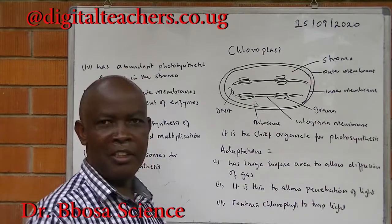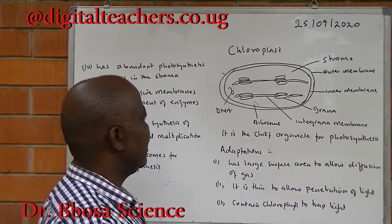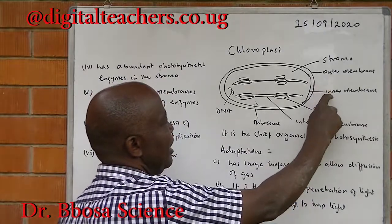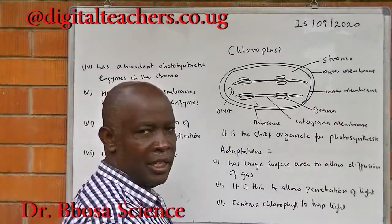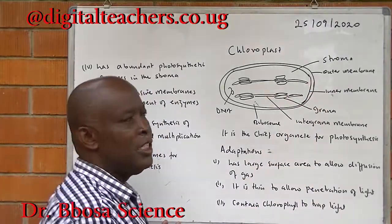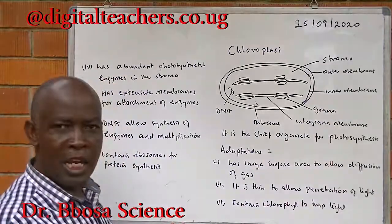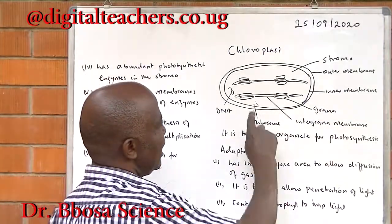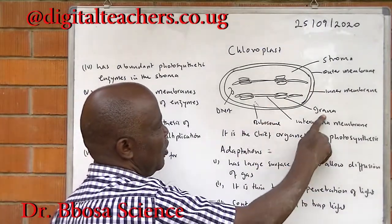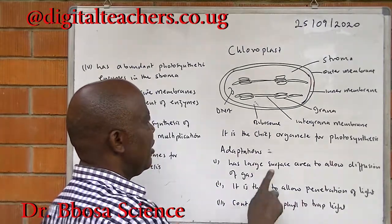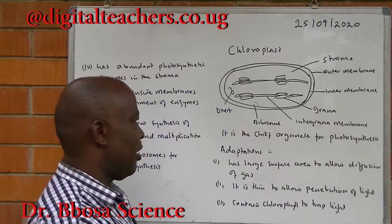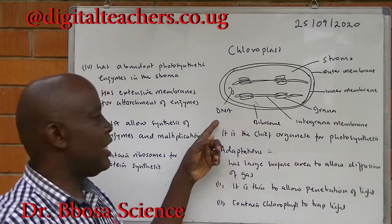This is the chloroplast — the major organelle for photosynthesis. It is bound by a double membrane: an outer membrane and an inner membrane. The inner membrane encloses a matrix called the stroma. Within the stroma, the membrane is arranged like a pile of coins called grana, and between the grana you have intergrana membranes. Also within the stroma, we have ribosomes and DNA.